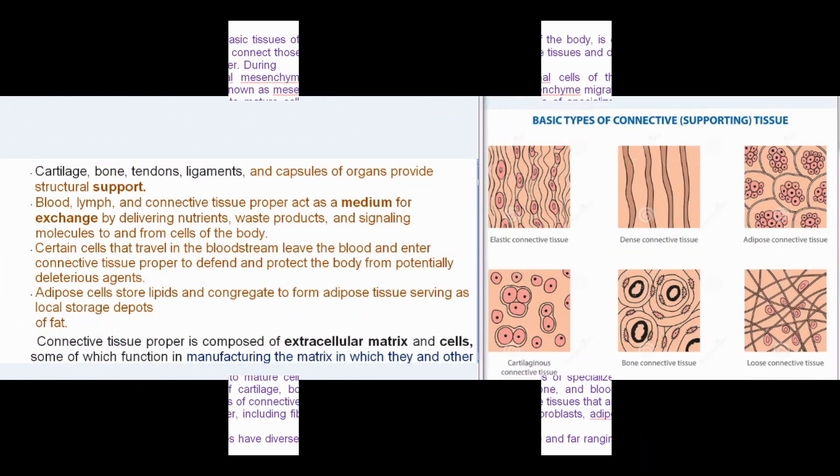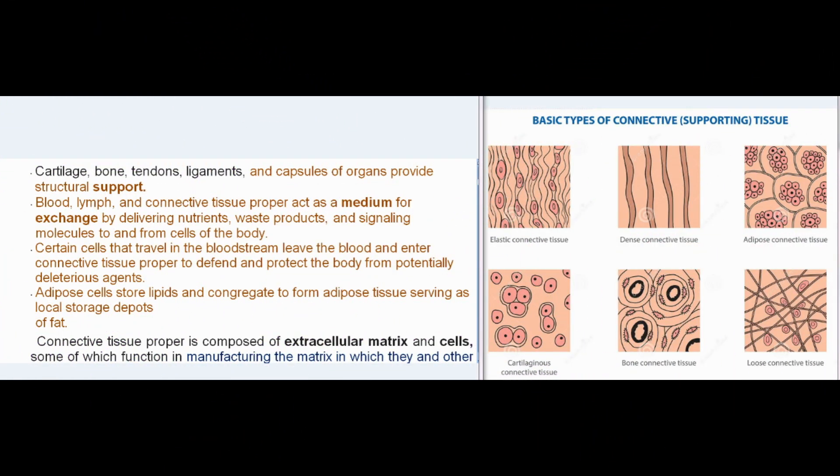The various types of connective tissues have diverse and far-ranging functions. Cartilage, bone, tendons, ligaments, and capsules of organs provide structural support. Blood, lymph, and connective tissue proper act as a medium for exchange by delivering nutrients, waste products, and signaling molecules to and from cells. Certain cells leave the blood and enter connective tissue proper to defend the body, while adipose cells store lipids. Connective tissue proper is composed of extracellular matrix and cells, some of which function in manufacturing the matrix.